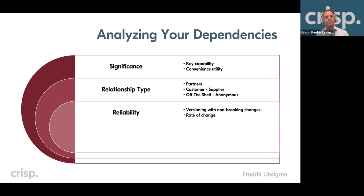The third thing to look at is the stability or reliability of this dependency — does it pose challenges when updating? Does it have good versioning practices? Do the people developing it care about and verify that they're not introducing breaking changes? And how often does it change? For dependencies that don't change very often, you probably don't need to spend a lot of time thinking about how it changes.